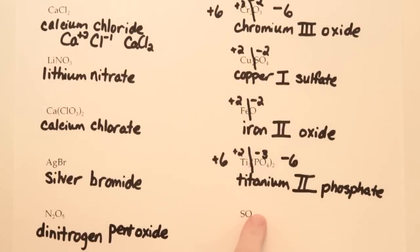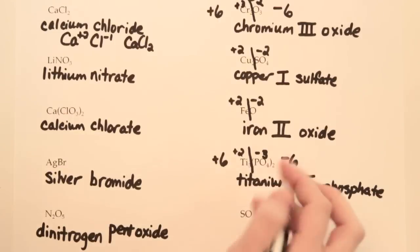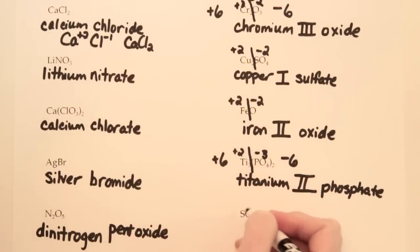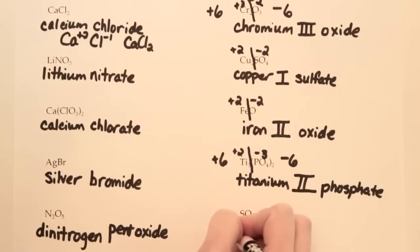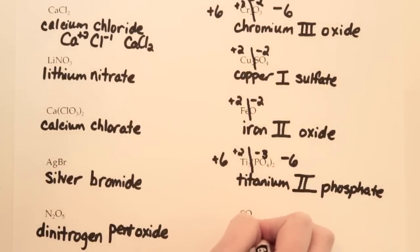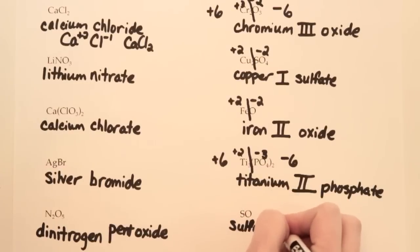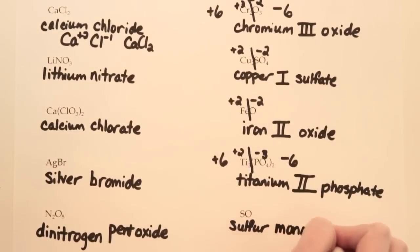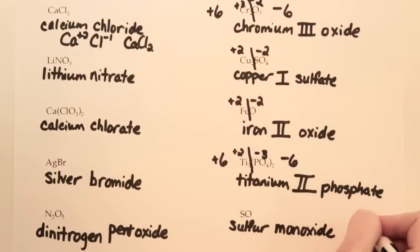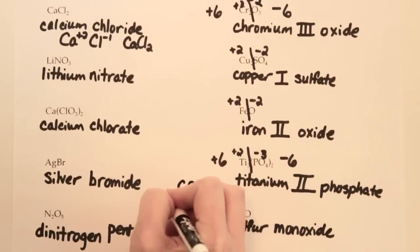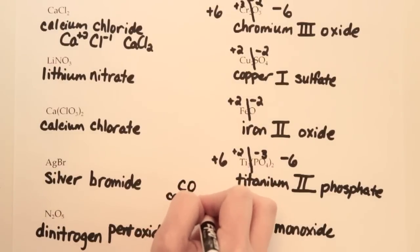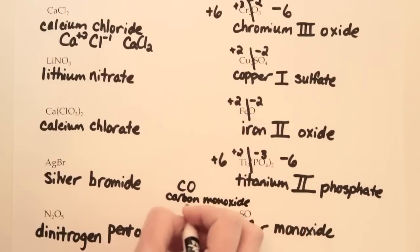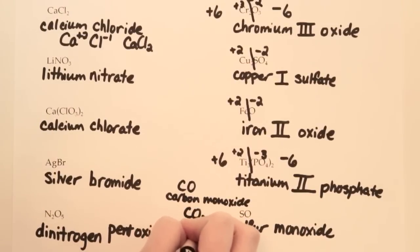Our last example: S and O — sulfur and oxygen. The prefix mono we only use if there's one of the second piece. So we just say sulfur — not monosulfur — but we do put the prefix mono on the second one. We'd call this sulfur monoxide. To remember that mono only goes on the second element, think of carbon monoxide — we just call it carbon monoxide. Or carbon dioxide — you don't say monocarbon dioxide. We only put mono if there's one of the second piece.